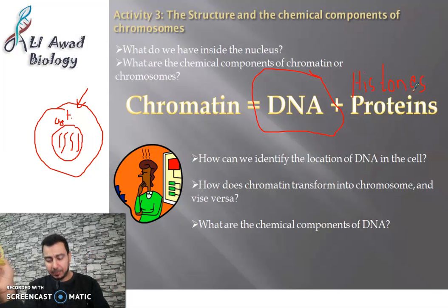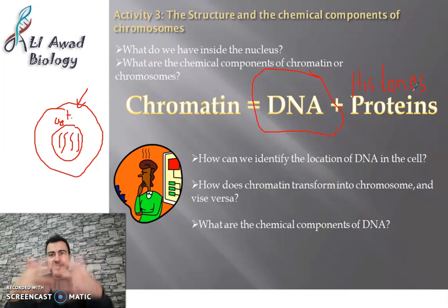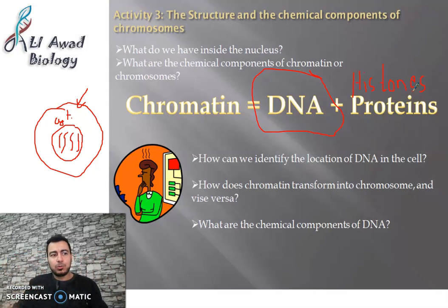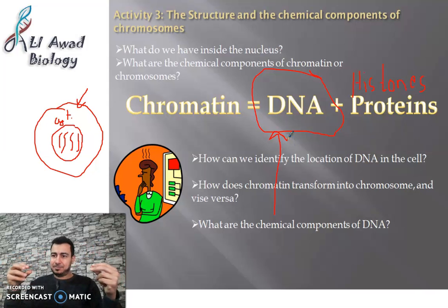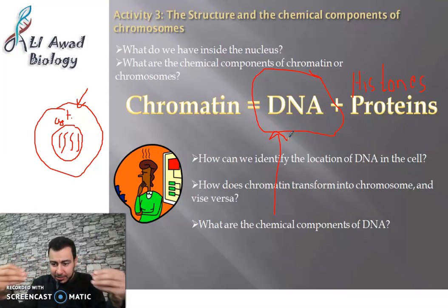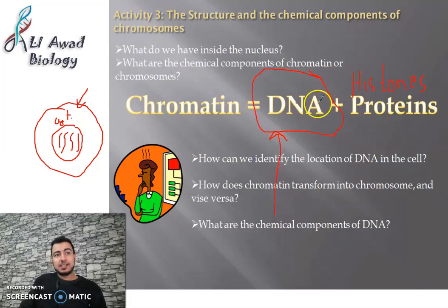DNA and histone proteins together form the chromatin. Think of the histone proteins like beads on a rosary — each bead is a histone protein. The string of the rosary is the DNA, because DNA is a linear molecule. DNA is a filament, like a line, made up of molecules arranged in a line. These molecules called DNA wrap around a protein called histone. Together, DNA and histone are called chromatin.